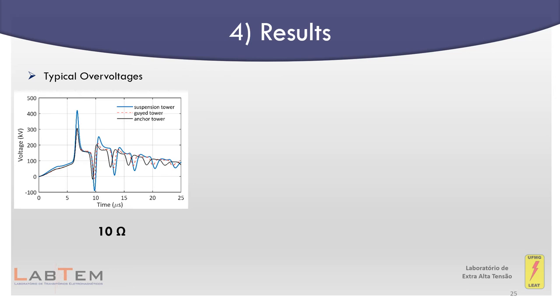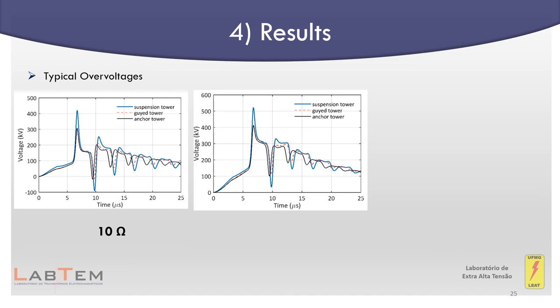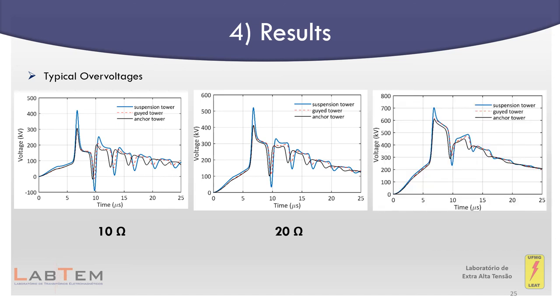The figures show the overvoltages arising across the lower left insulator string due to a direct strike to the tower top, considering the three distinct typical towers of the 230 kV line and assuming tower foot impedance values of 10, 20, and 40 ohms. The suspension towers present the higher peak overvoltage values in comparison with both Gaia and anchor towers, which in turn show similar peak values. This stems from the higher equivalent surge impedance of the suspension towers. The differences between the voltage curves tend to decrease with increasing tower foot impedance.